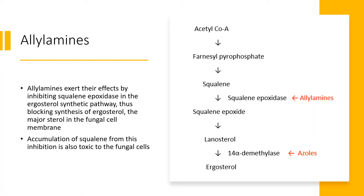Allylamines work by inhibiting ergosterol synthesis. Looking at the ergosterol synthesis pathway: it starts from acetyl-CoA, then farnesyl pyrophosphate, then squalene. Squalene by squalene epoxidase produces squalene epoxide, then lanosterol by 14-alpha-demethylase produces ergosterol. Allylamines work by inhibiting the squalene epoxidase enzyme.